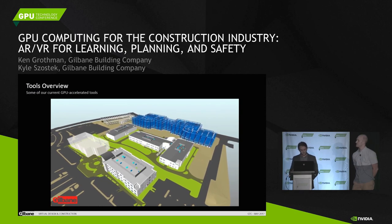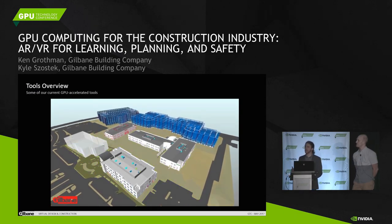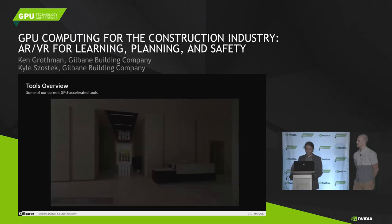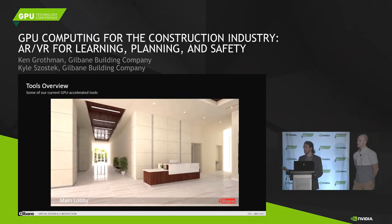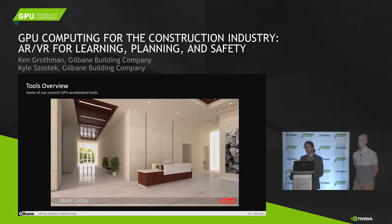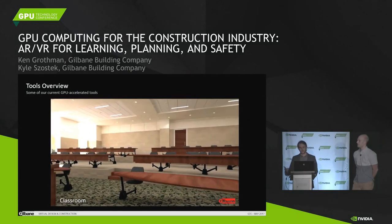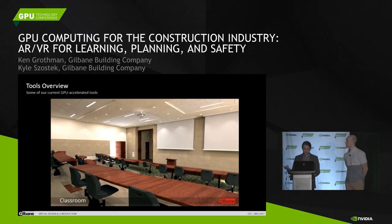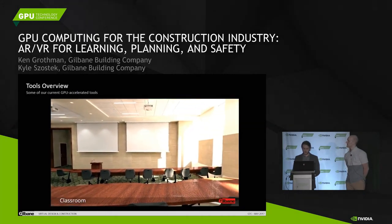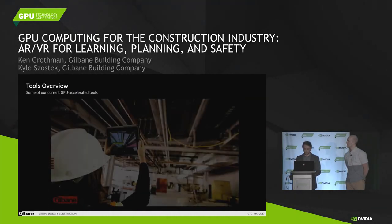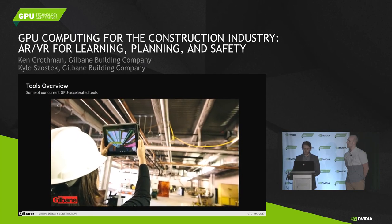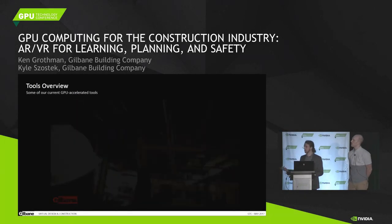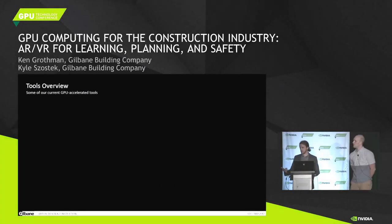Another bottleneck is the GPU processing capacity of our mobile devices to support highly complex 3D models and associated data sets while we're on the go, because we're constantly going on and off project sites. In the future, as graphics processing gets smaller and faster, we'll be able to collaborate more efficiently and solve more complicated issues faster before they can affect the construction schedule, which is the goal of our toolset.